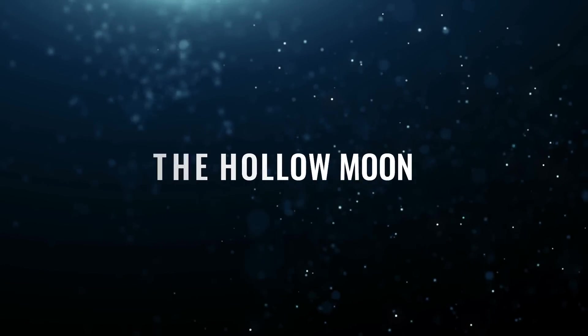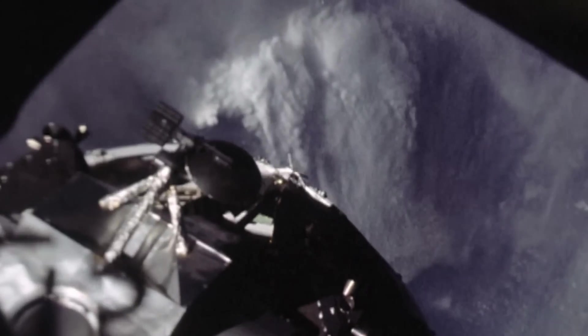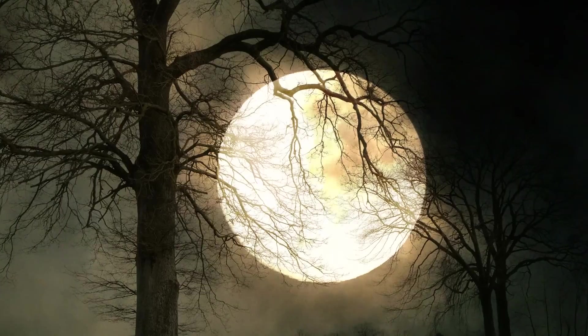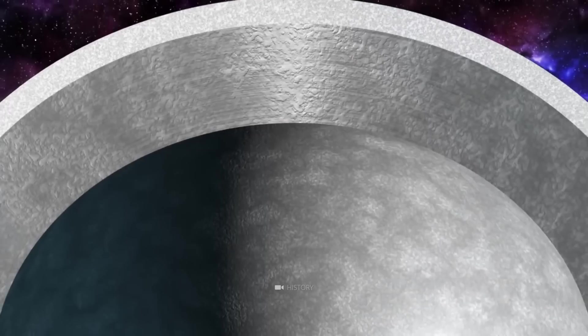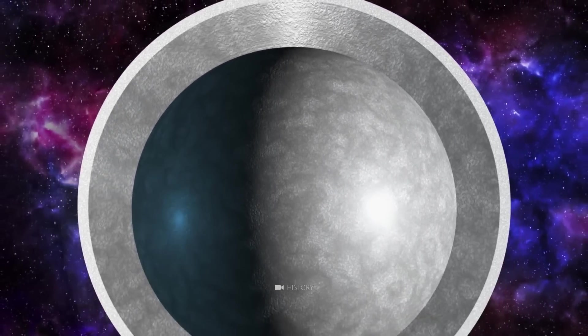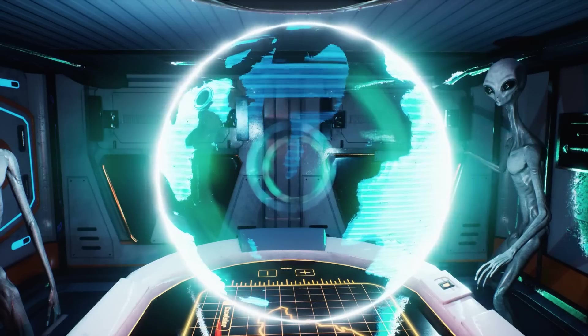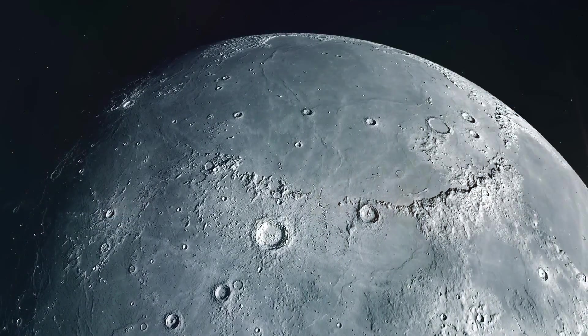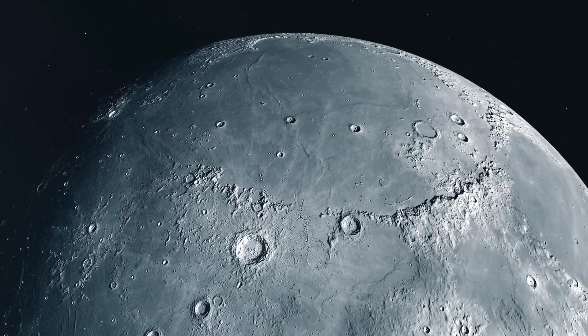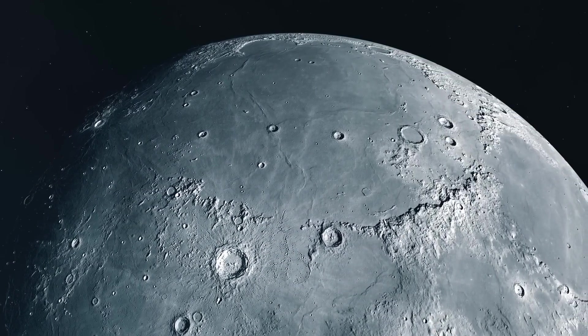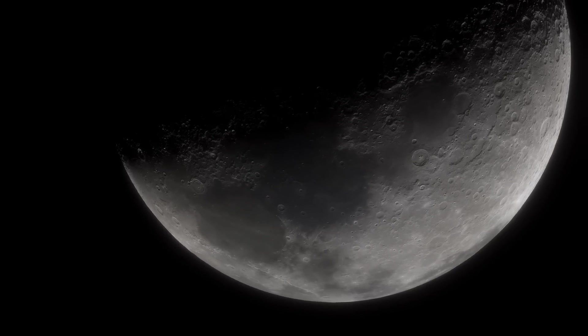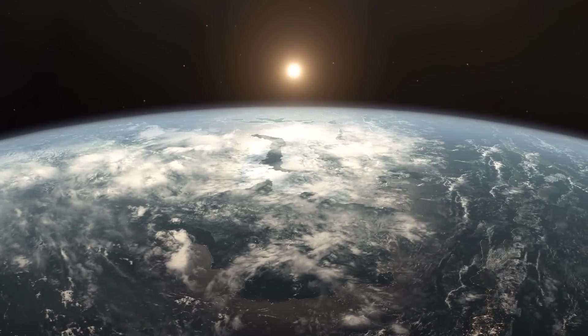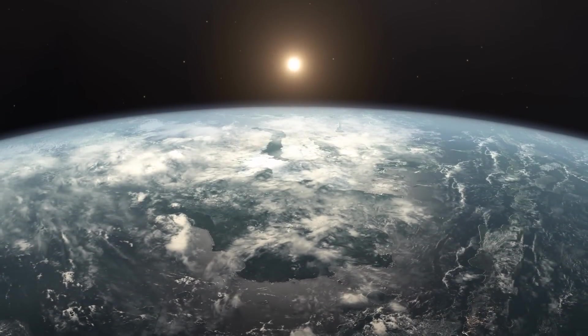The hollow moon. But how could some people be rock solidly convinced of this theory? So that we may understand ourselves correctly, the supporters of the hollow moon theory do not only indicate that the interior of the moon has enormous hollow spaces, but it would be in truth around an artificially created space station. In this regard, often the lower density of the celestial body is referred to. While the Trabant has an average density of 3.3 grams per cubic centimeter, the value amounts to 5.5 grams per cubic centimeter in the case of our Earth.